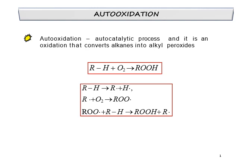Apart from combustion, O2 oxidation is also another reaction that uses the concept of chain reaction. O2 oxidation can be defined as an autocatalytic process, and it is an oxidation that converts alkene into alkyl peroxide through O2 oxidation.